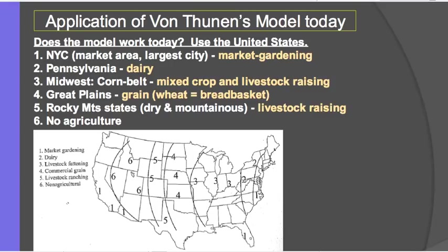Ring five is our livestock ranching, which was the furthest-out ring according to Von Thunen. In Colorado, there is livestock grazing that's kind of open range — cowboys and things like that — and it's a little dry and mountainous, so it's not good for growing crops. Ring six would be kind of in our Rocky Mountains, where we don't really have a lot of agriculture. And then all the way over to California and a little bit into Arizona, that is definitely a lot of agriculture, and that would be like a separate market area.